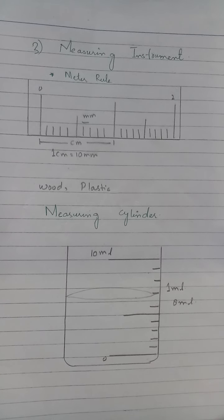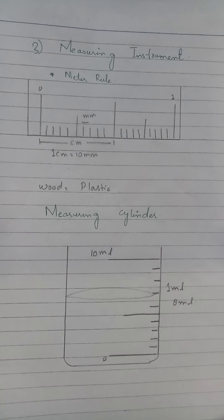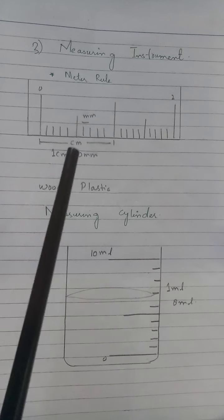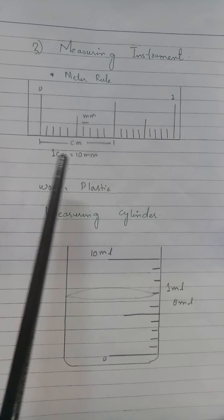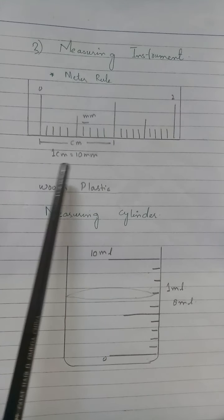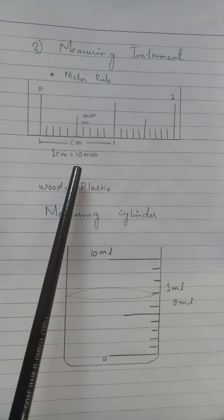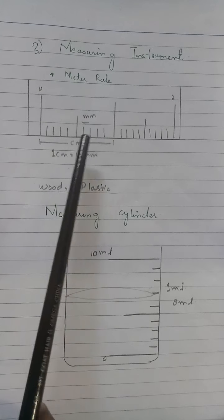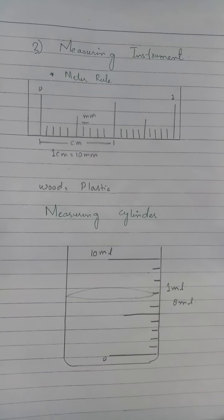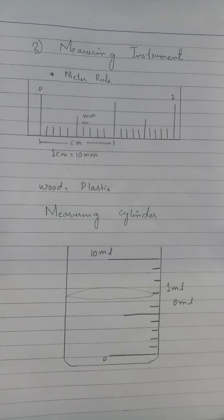We started measuring instruments. We studied 2 instruments. The first was the meter rule — the instrument we use to measure any length is called a meter rule. We learned that the two small lines on it represent one millimeter, and one centimeter is equal to ten millimeters.